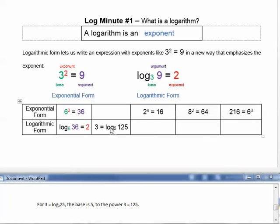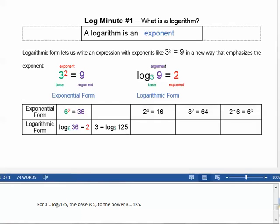For 3 equals log base 5 of 125, the base is 5 to the power 3 equals the argument 125.